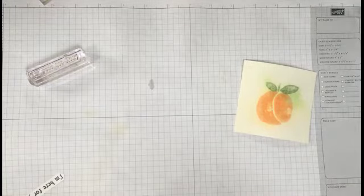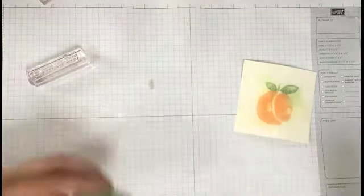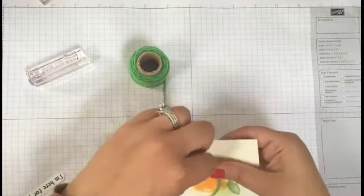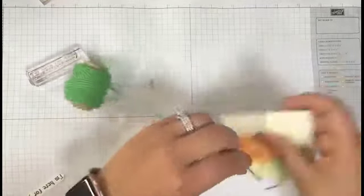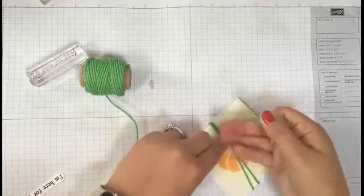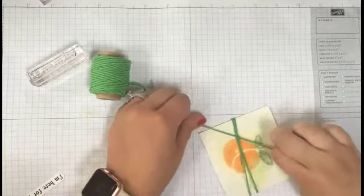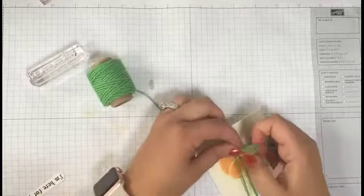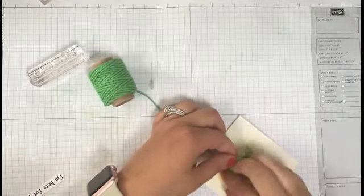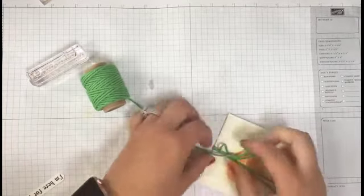And then they have used some of the striped baker's twine. I haven't got any in the right color so I'm going to use some Cucumber Crush to really bring out the green. I'm going to start here, leave a little bit for my bow, wrap it around twice, tie it up. And then I'm going to tie a bow. Now they attached their label into their bow which you could do.